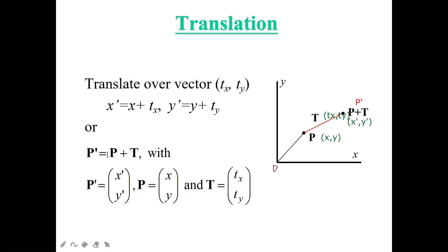P' is the new point, equals P plus T, where P is the old point and T is the translation vector. In matrix form: P' is [x', y'], P is [x, y], and the translation vector T is [tx, ty]. So P' = P + T in matrix form, where x' = x + tx and y' = y + ty.